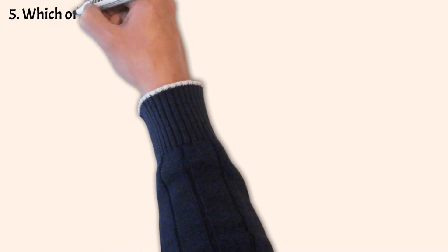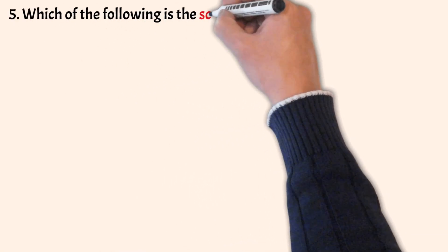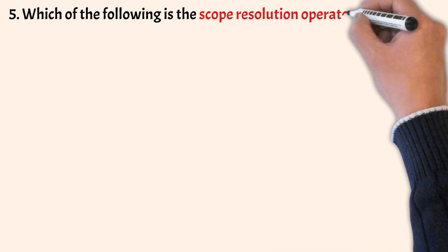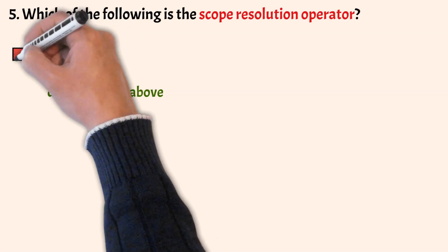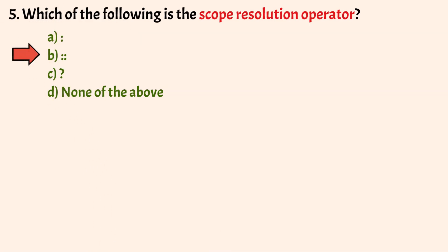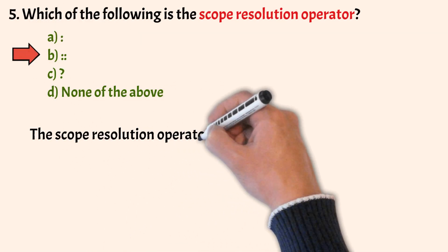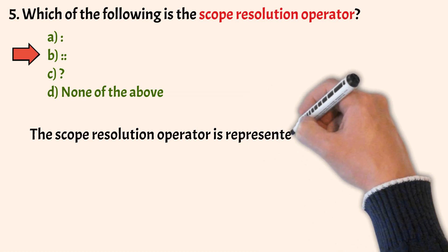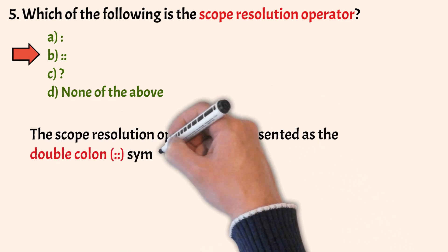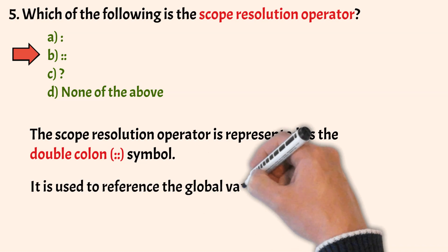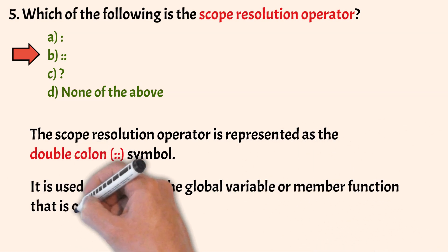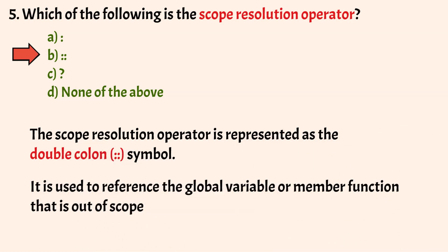Which of the following is scope resolution operator? The correct answer is option B. The scope resolution operator is represented as the double colon symbol and it is used to reference a global variable or member function that is out of scope of a class.